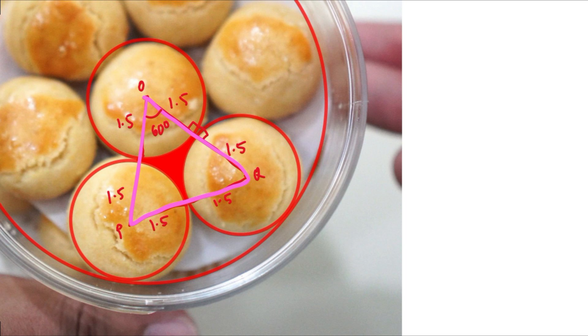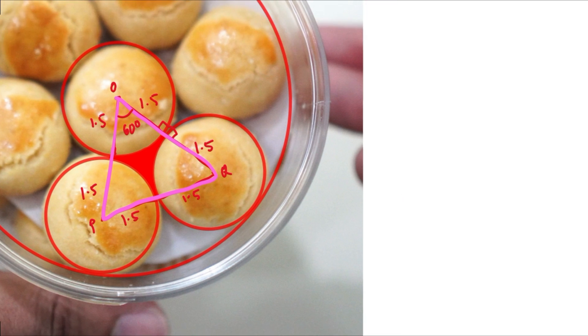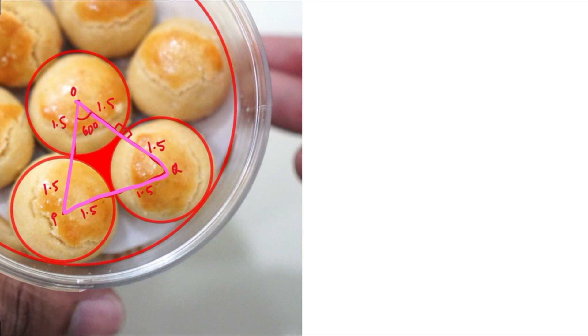And so now we can calculate the area in between. If we were to calculate the area in between, all we need to do is take the area of the triangle O, P, Q and subtract three times. If we look carefully, here we can find we have sectors of circle. We have three identical sectors here because all the internal angles are 60 degrees.